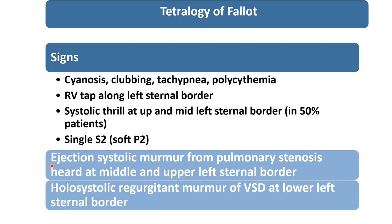There are two types of murmur: one is ejection systolic murmur from PS, heard at the middle and upper left sternal border. Another is holosystolic murmur of the ventricular septal defect at the lower left sternal border. So these are the characteristics of TOF. Thank you so much.